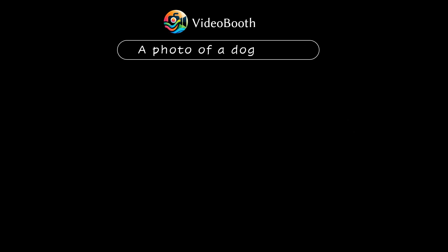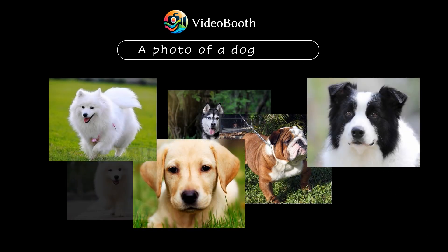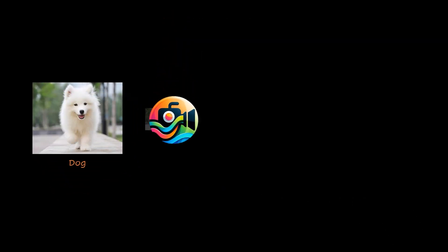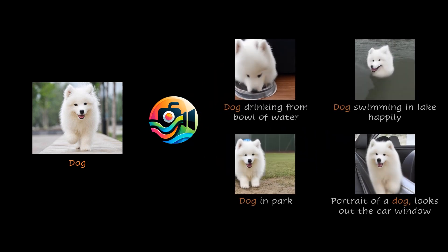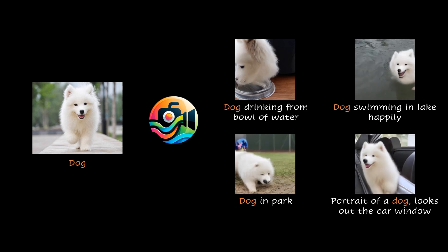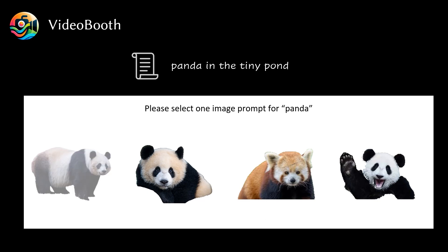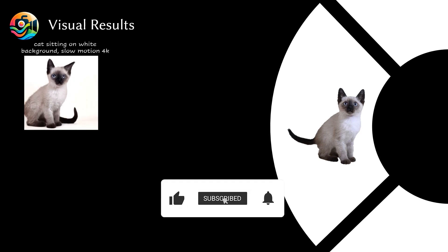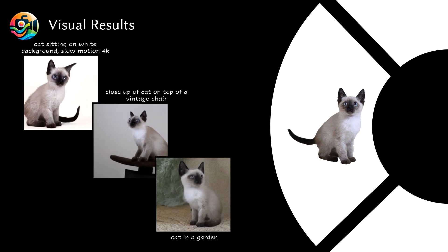Here is a demo from their GitHub page. By using an image of a dog and combining it with various prompts like 'dog drinking from a bowl of water' or 'dog swimming in a lake happily,' the AI was able to create different video scenarios while keeping the dog's appearance consistent throughout. Before this technology, characters would often slightly alter in appearance from scene to scene in AI-generated videos, but with improvements like this — whether it's a cat on a white background, a cat on a vintage chair, or a cat in a garden — the character remains the same across different videos.